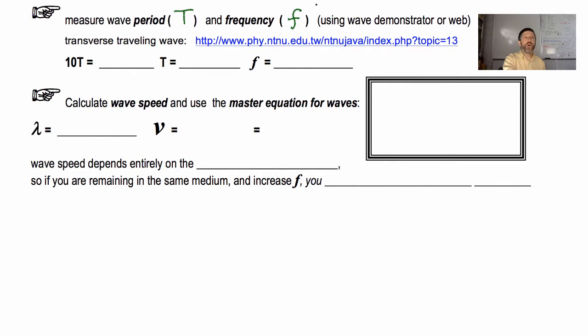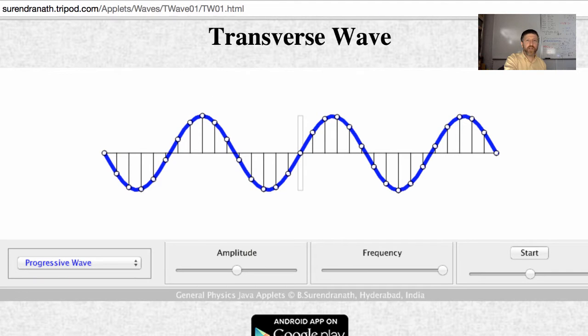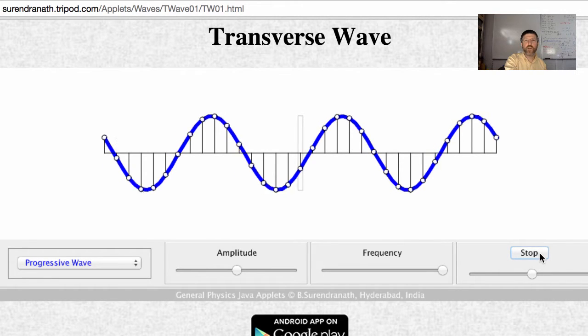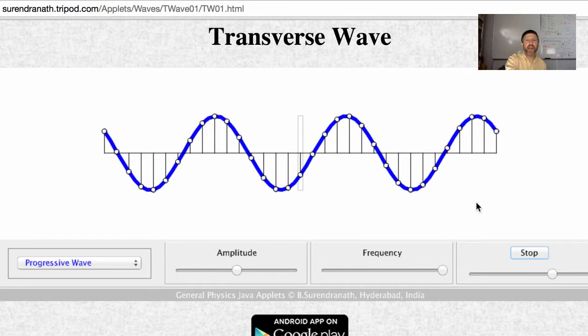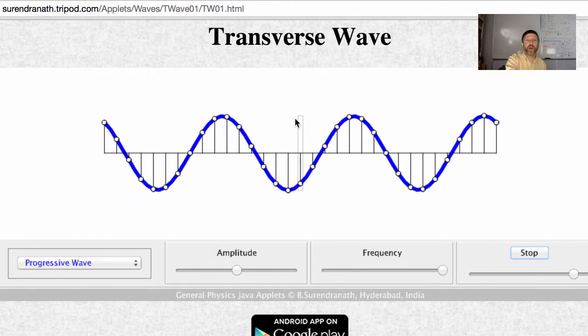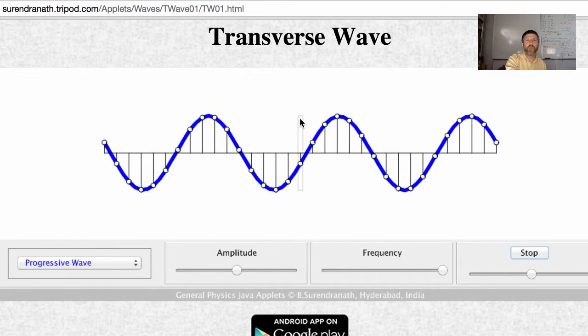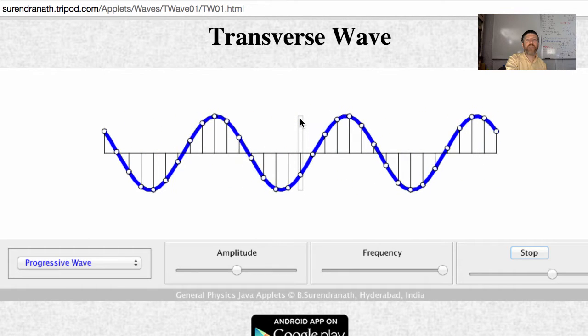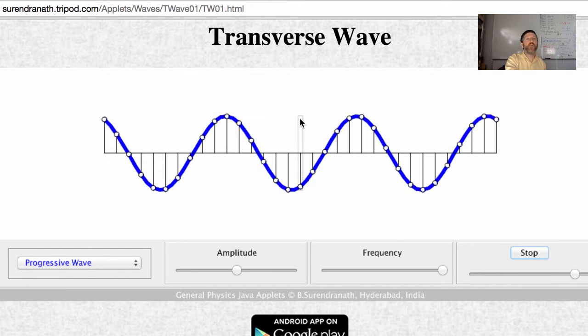Just like we did a pendulum, we're going to measure 10 T and then we're going to determine T. So let's take a look at this applet right here. I'm just going to give it a start here and you'll see there's a line right here. What we're going to do is we're going to time this every time it crosses this line right here. So when the crest crosses that line, we'll start.